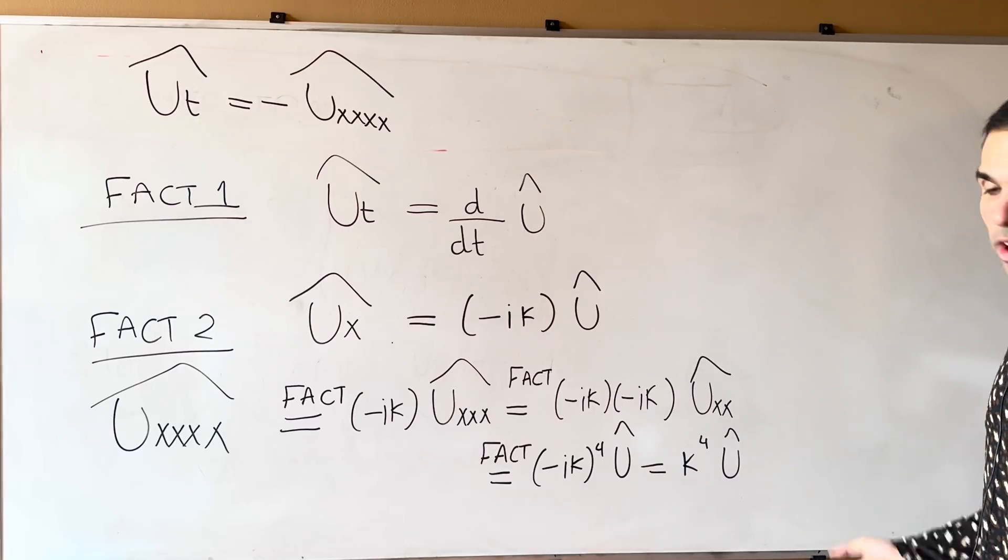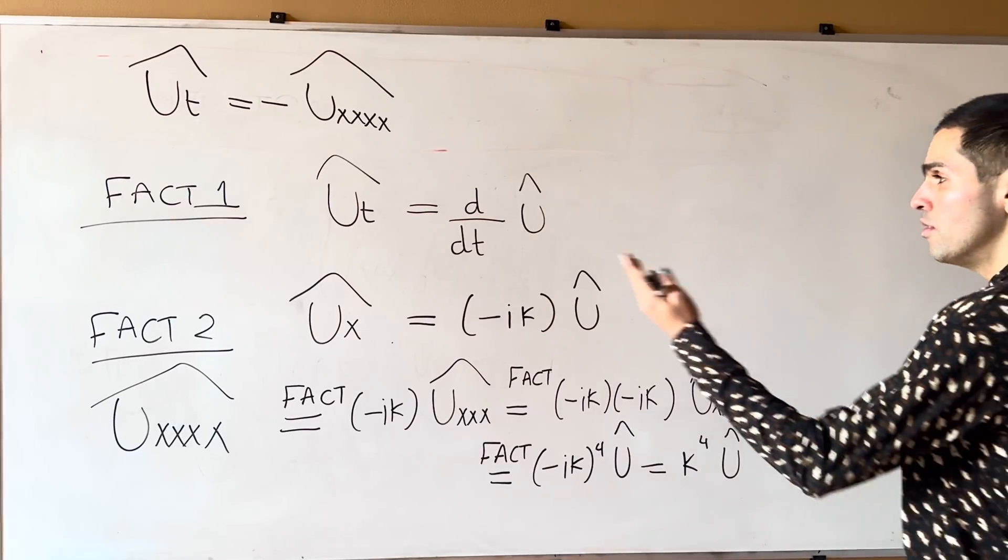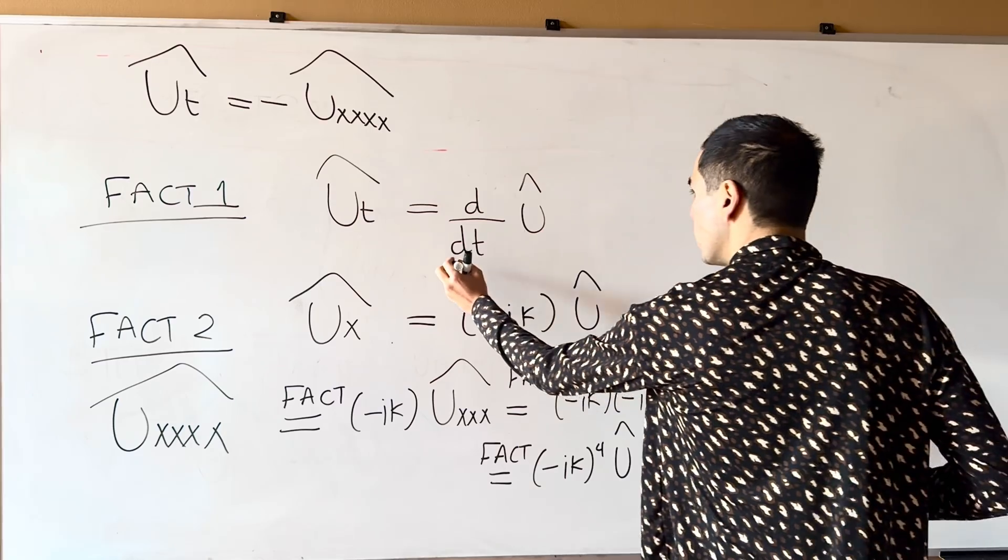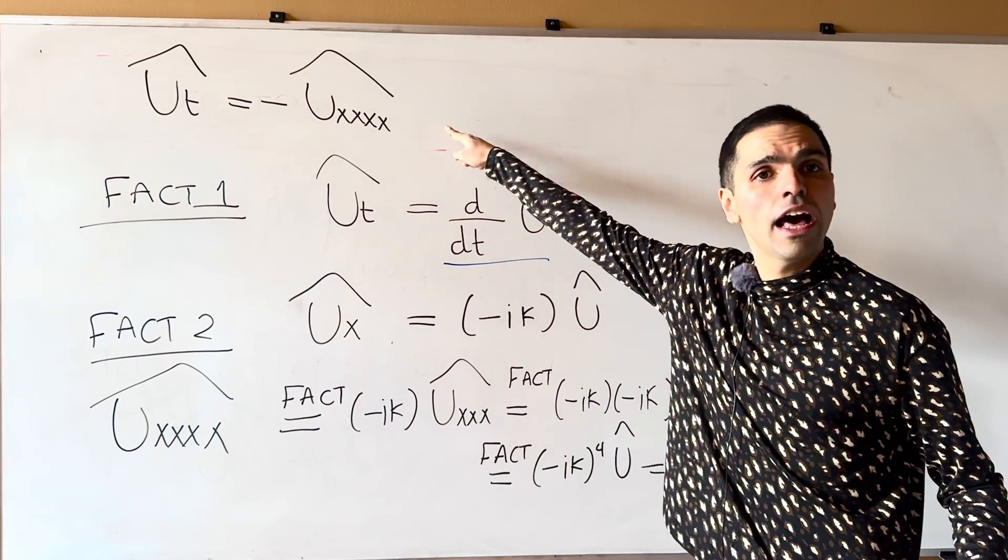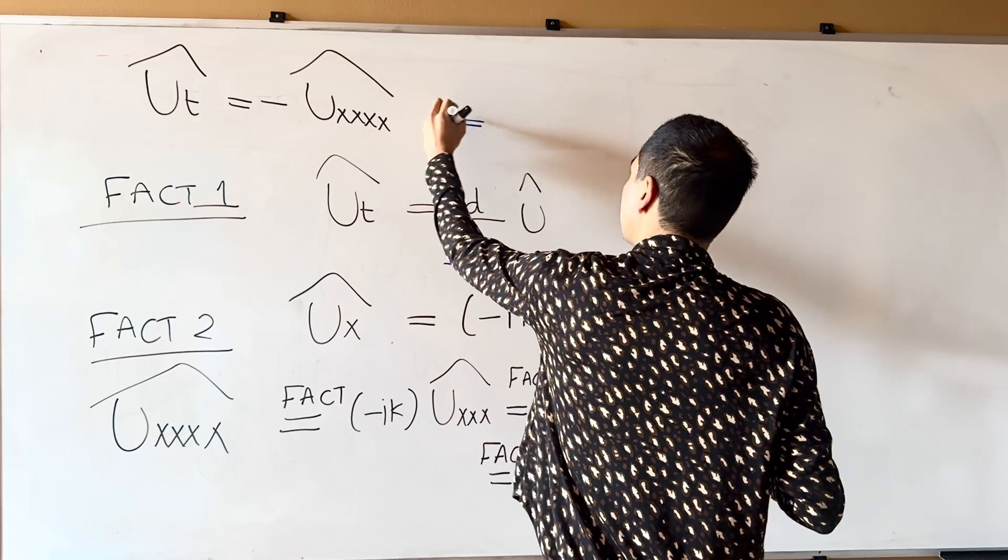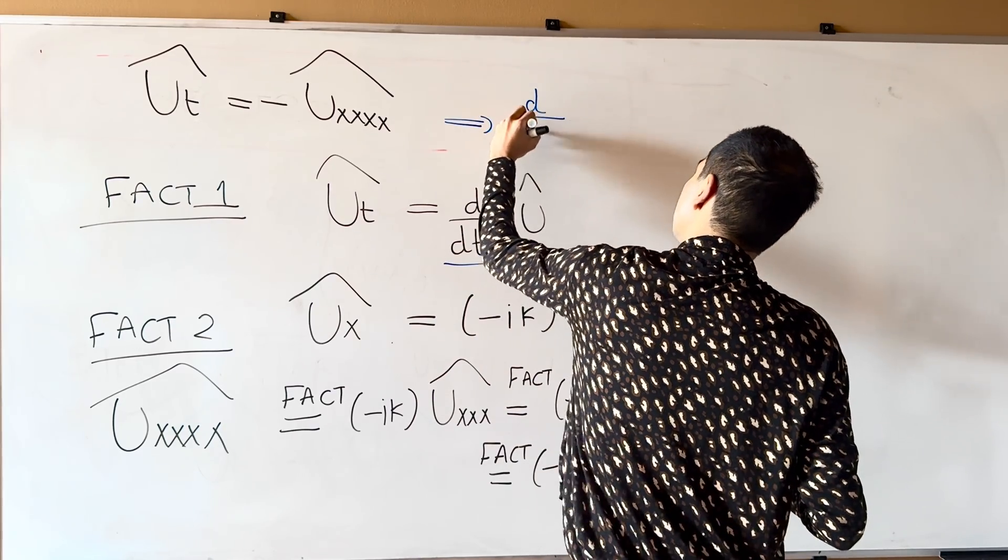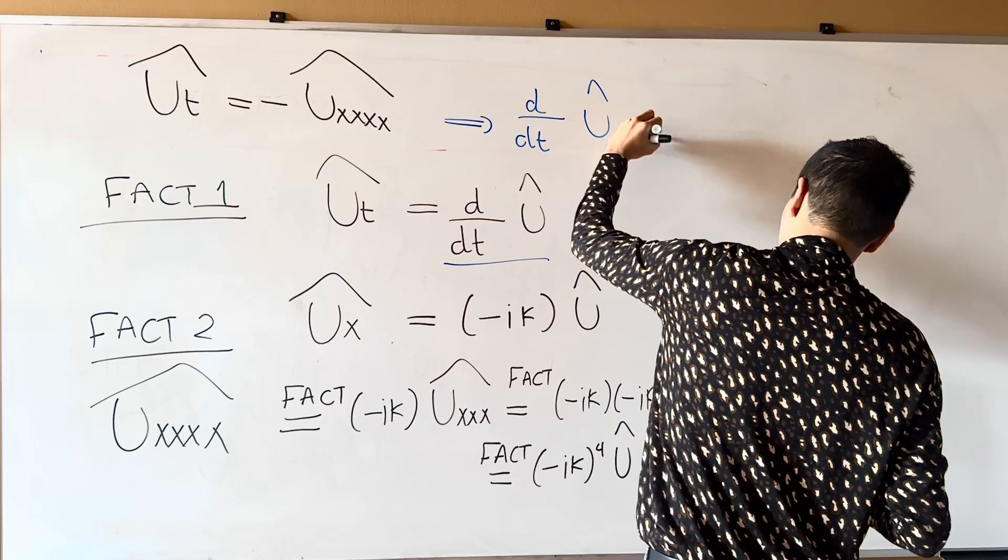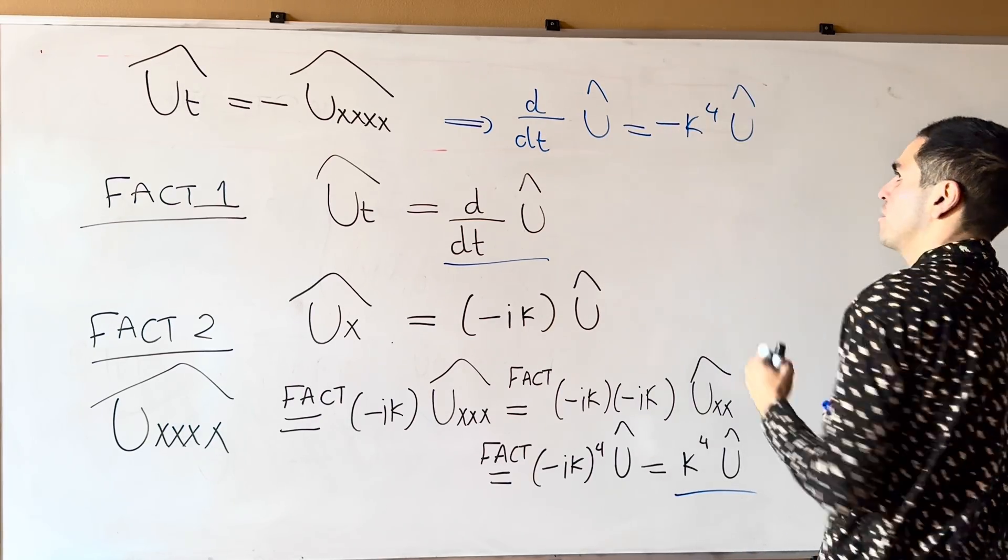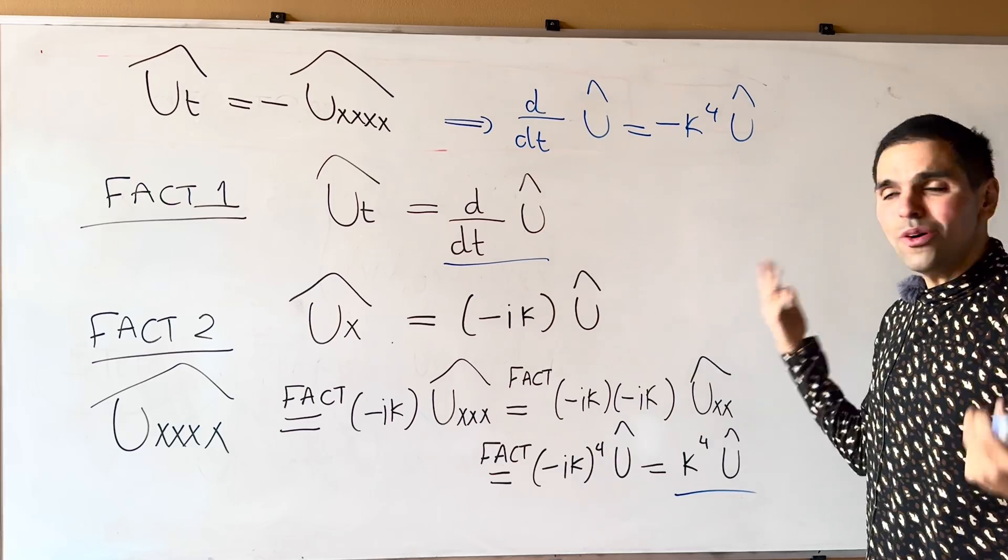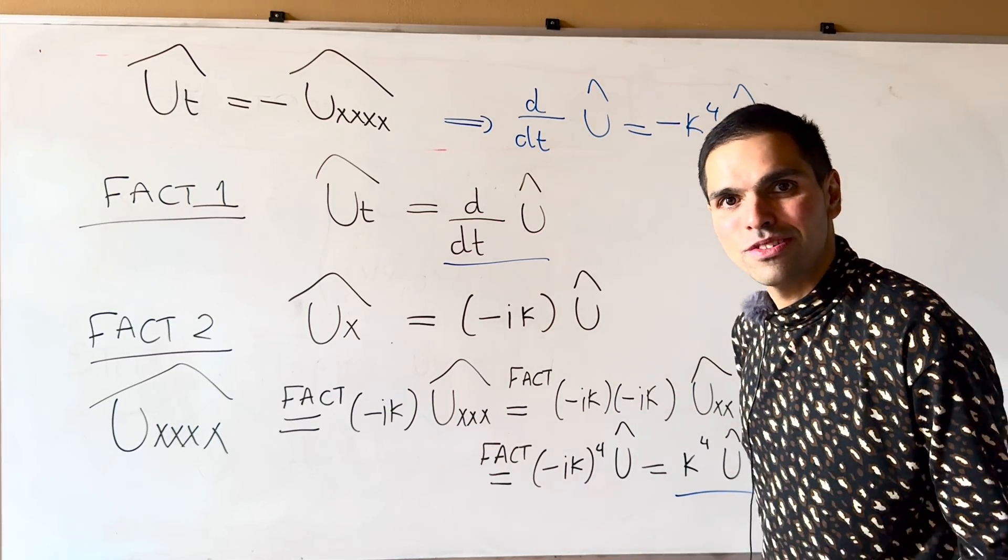If you plug in both things, this fact and this fact into that PDE, you end up getting D over DT U hat equals minus kappa to the fourth U hat, which is now an ODE that we'll be able to solve.